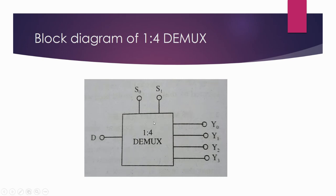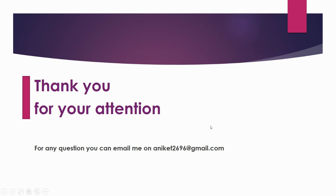Now let's talk about the block diagram. If in the exam you are asked to draw a 1-to-2 demultiplexer block diagram, you have only one input and two output lines with one select line. For 1-to-8, there will be three select lines and eight output lines with only one input. That's all for the demultiplexer. Thank you for paying attention. If you have any query you can mail me. Please subscribe to my channel and like the video.